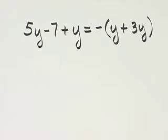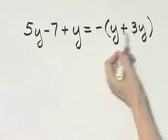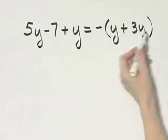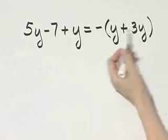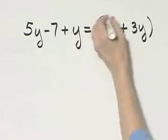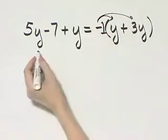We do have parentheses, which you can handle in one of two ways. Inside, these just happen to be like terms, so you could go ahead and add these. That would be 4y, and this is the opposite of 4y. If you happened not to notice, you're still okay by using the distributive property.